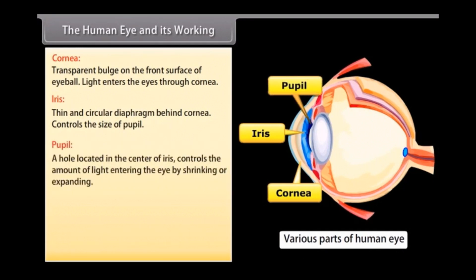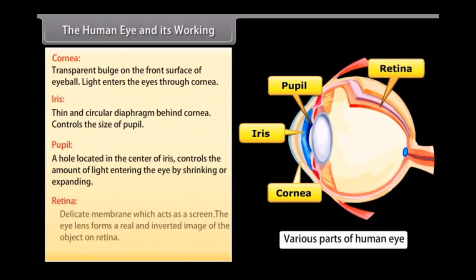The pupil is a hole in the center of the iris that appears black and controls the amount of light entering the eyes by shrinking or expanding. The retina is a delicate membrane which acts as a screen — the eye lens forms a real and inverted image of the object on the retina.